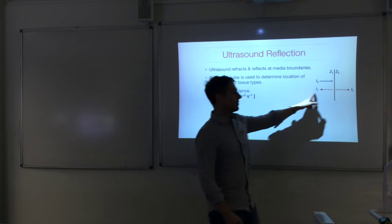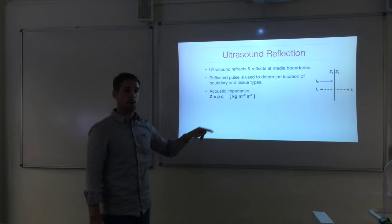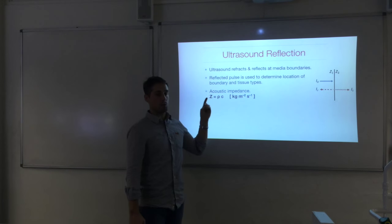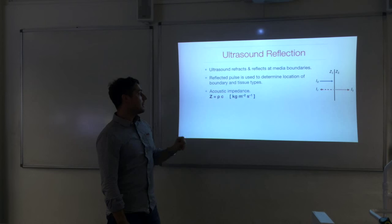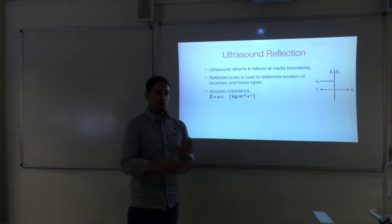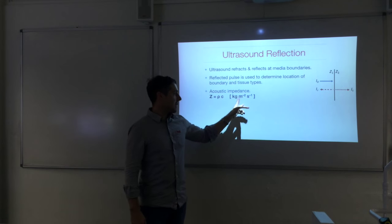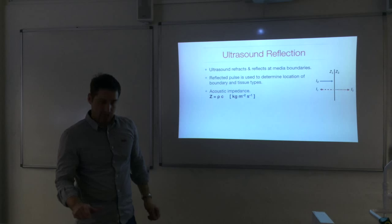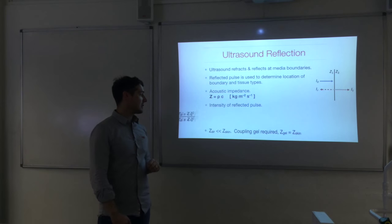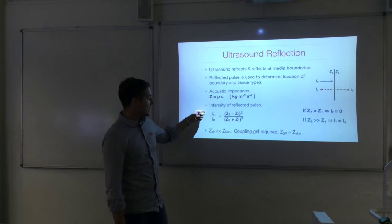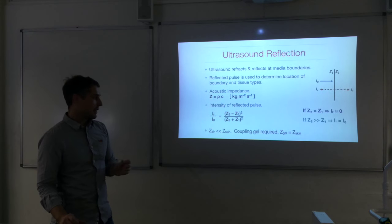To understand reflection in terms of intensities, we need the quantity acoustic impedance. Z equals density multiplied by the speed of sound in that material: Z = rho × c, where rho is the density of the tissue and c is the speed of sound in that tissue. Z is the acoustic impedance with units of kilograms per metre squared per second. The ratio of reflected to incident intensity is: IR/I0 = (Z2 - Z1)² / (Z2 + Z1)².